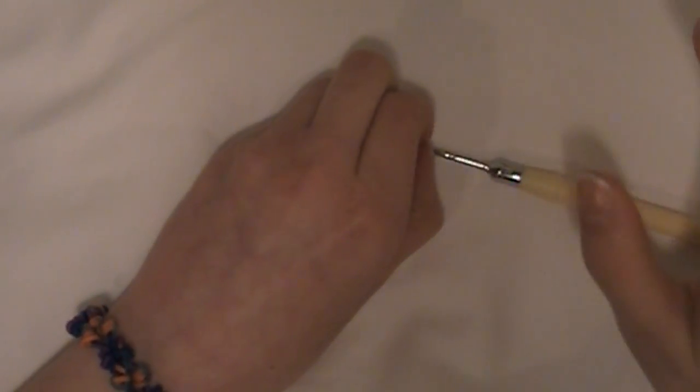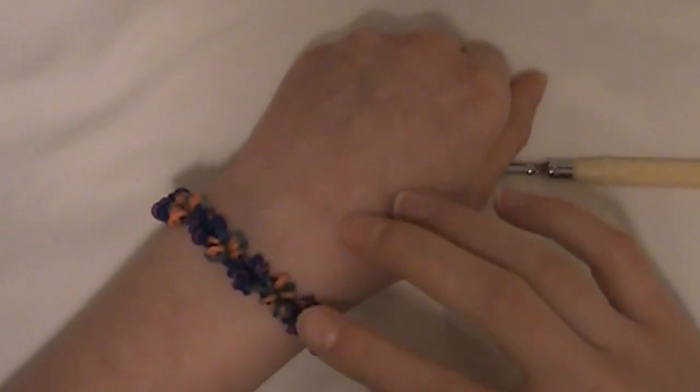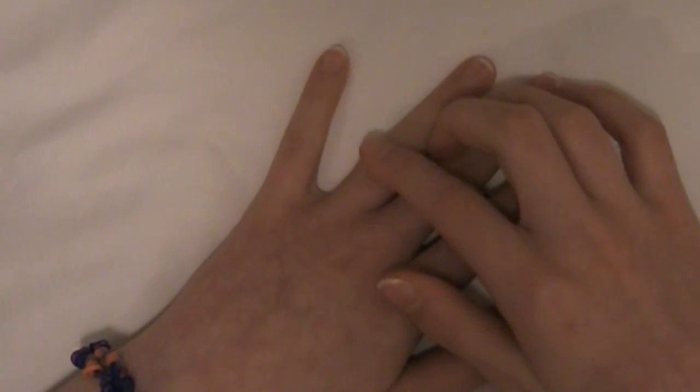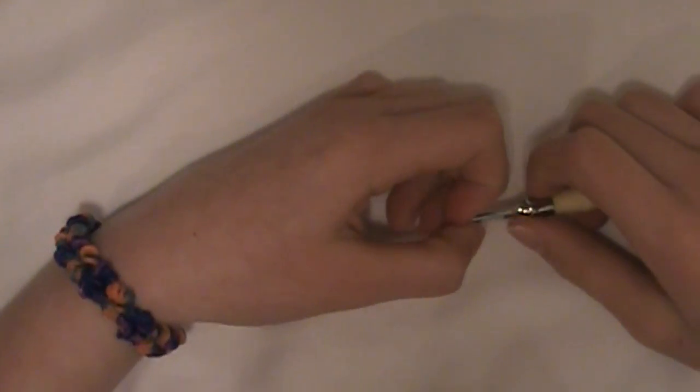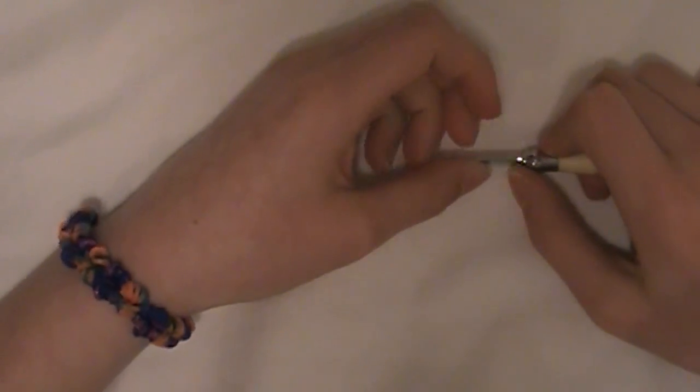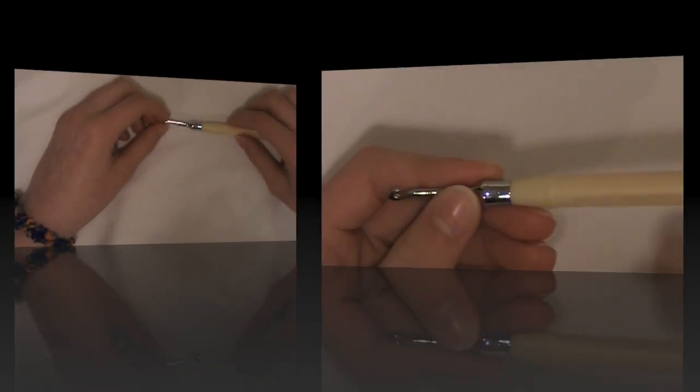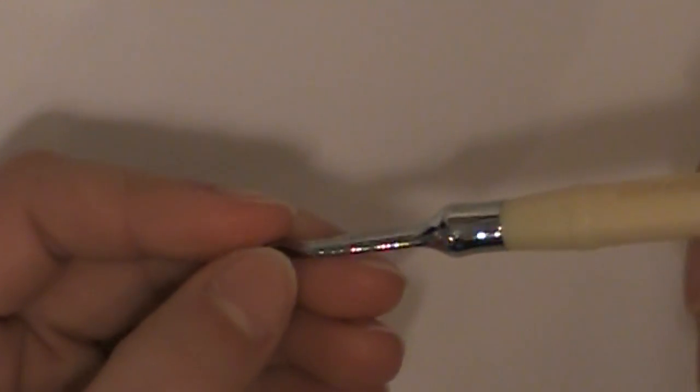How many bands you'll need depends on your wrist size. Mine took a good bit but you can also make a ring or other things with this pattern and it looks really cool. So you'll also need a hook and a c-clip. Okay so let's get started.